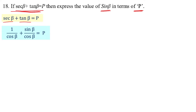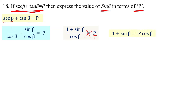We rearrange it as: 1 plus sin beta divided by cos beta equal to p. Then by cross multiplication, 1 plus sin beta equal to p times cos beta.